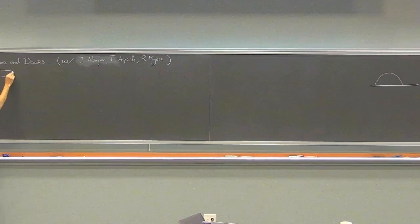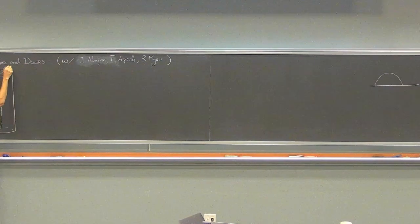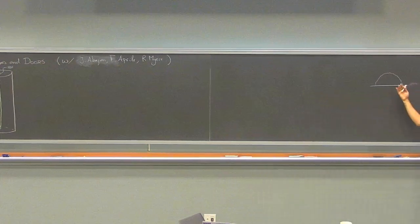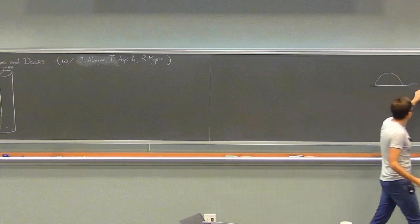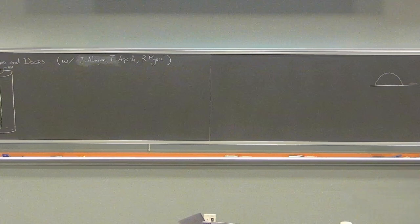Another type of computation we often do: we have AdS in global coordinates — that's a cylinder — and we consider a heavy operator, say a black hole, lying somewhere in global AdS. We study thermodynamics, entropy of these black holes, and so on. Now one thing we could ask is: how do I study correlation functions in holography for operators that become extremely large — as large as the operators that would create these black holes?